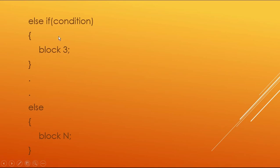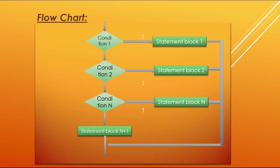Block three will be executed if that condition comes true. At the end, the else block will be executed if none of the above conditions become true — by default the else statement or block will be executed. Now let us look at the flowchart to understand how it works.